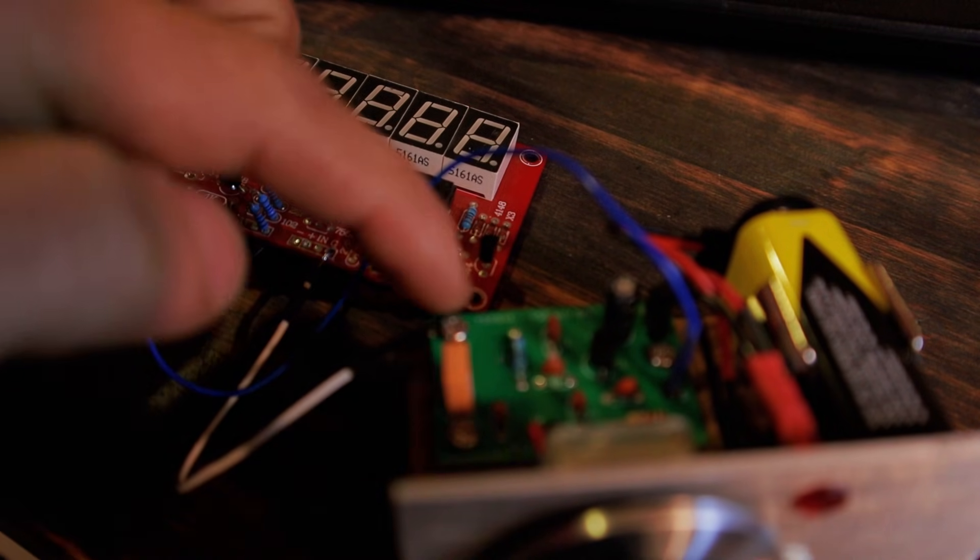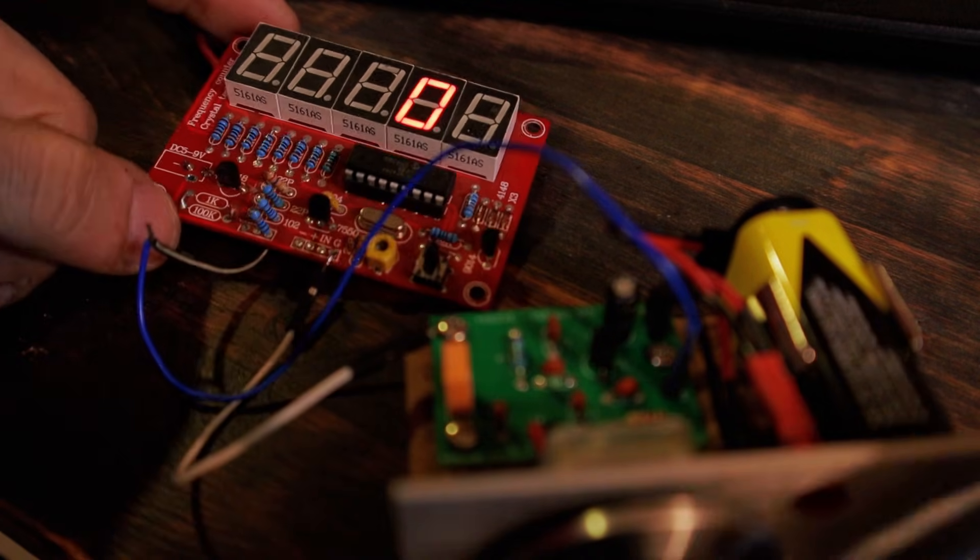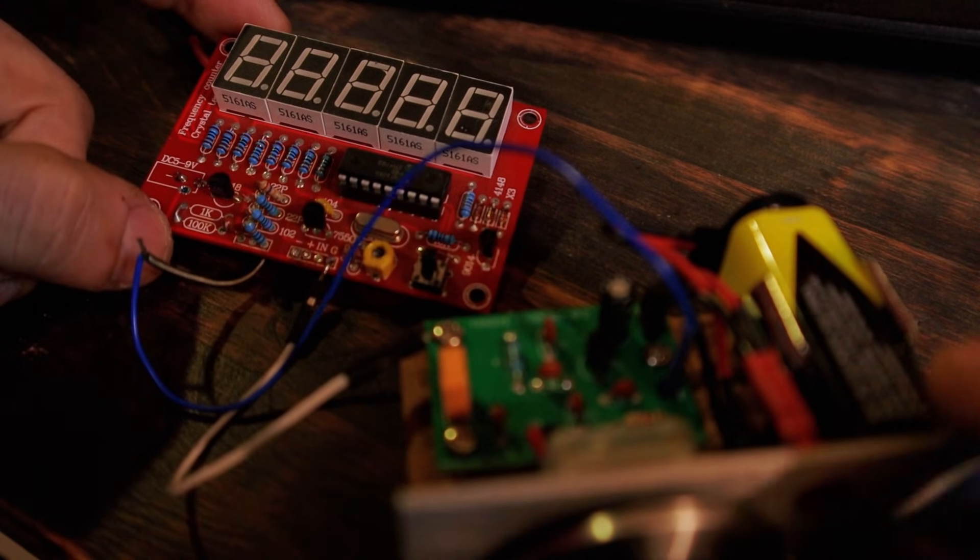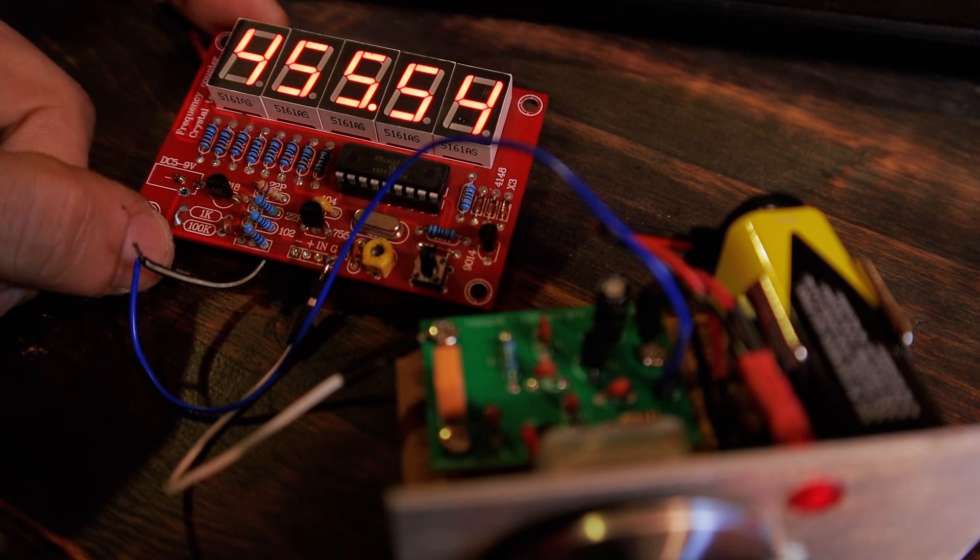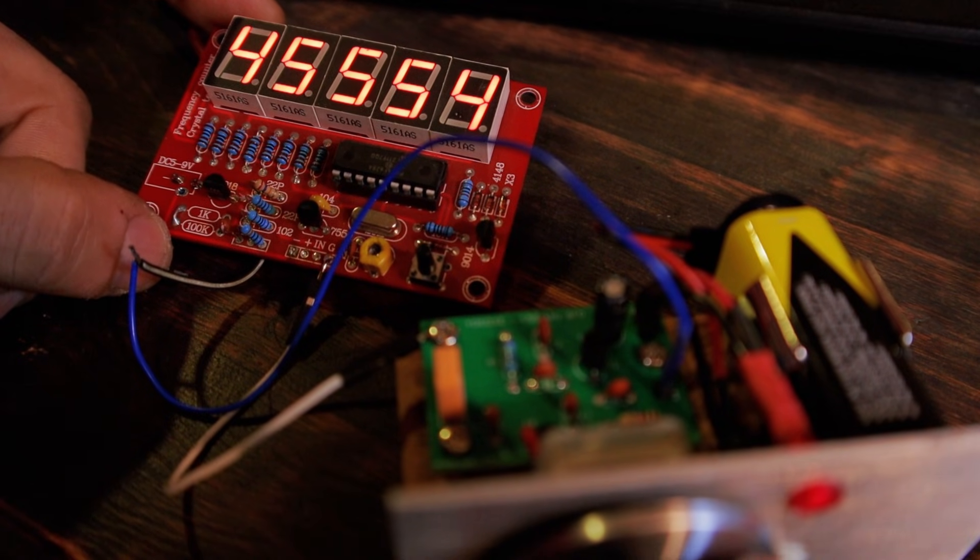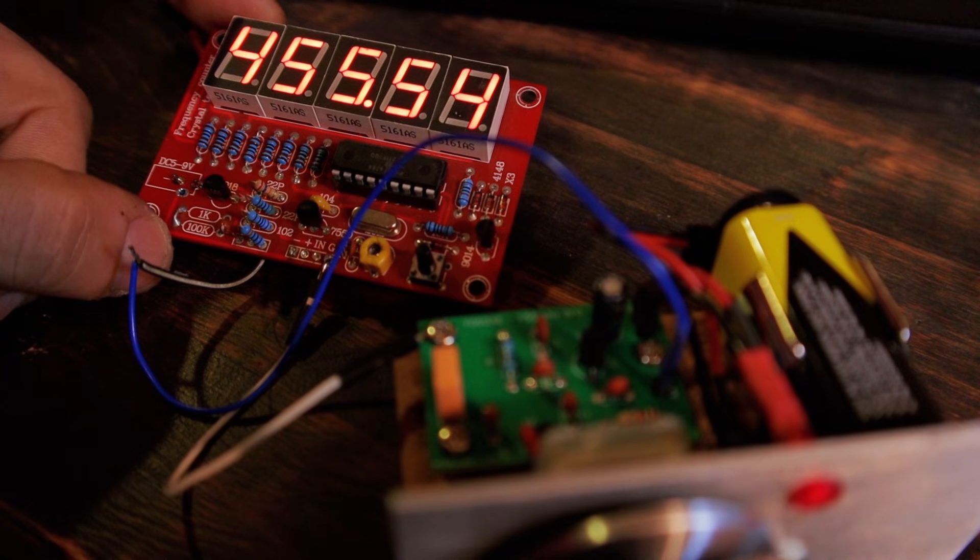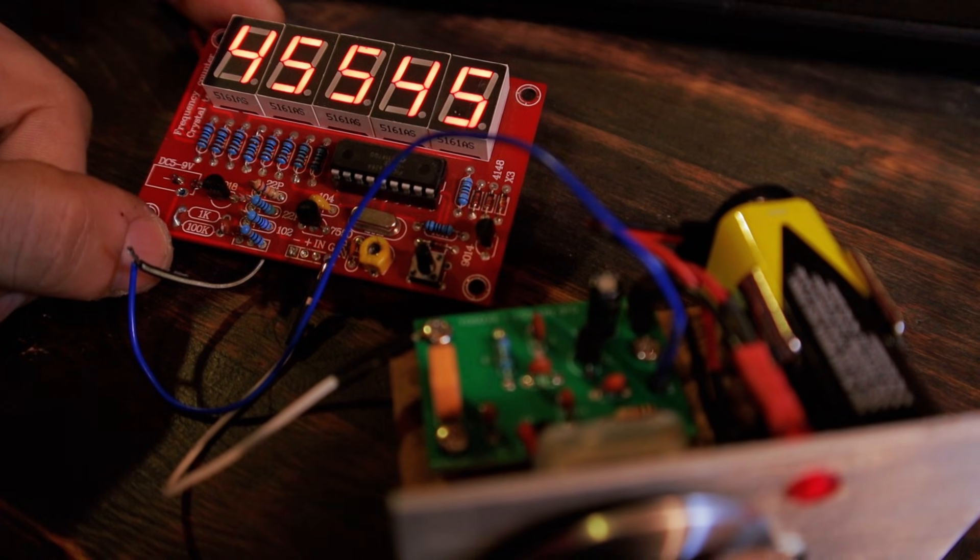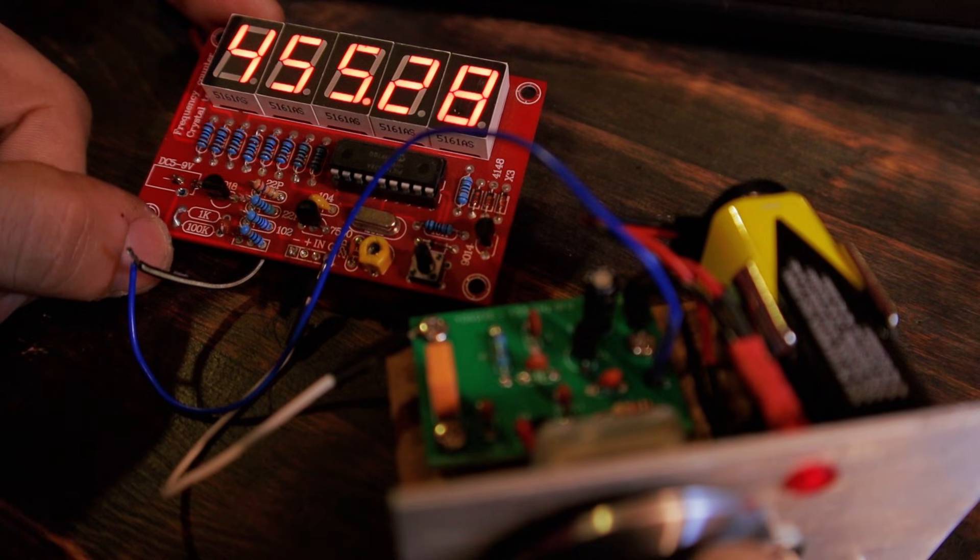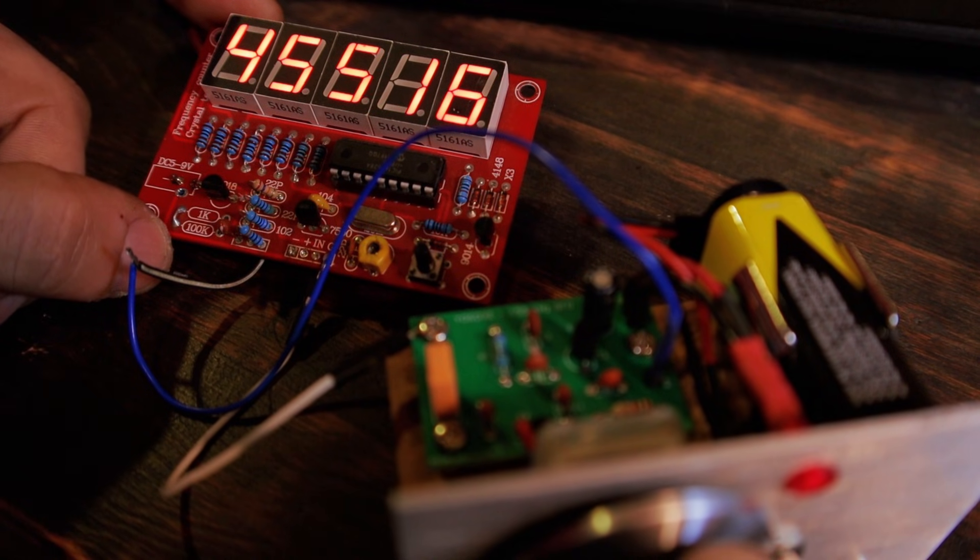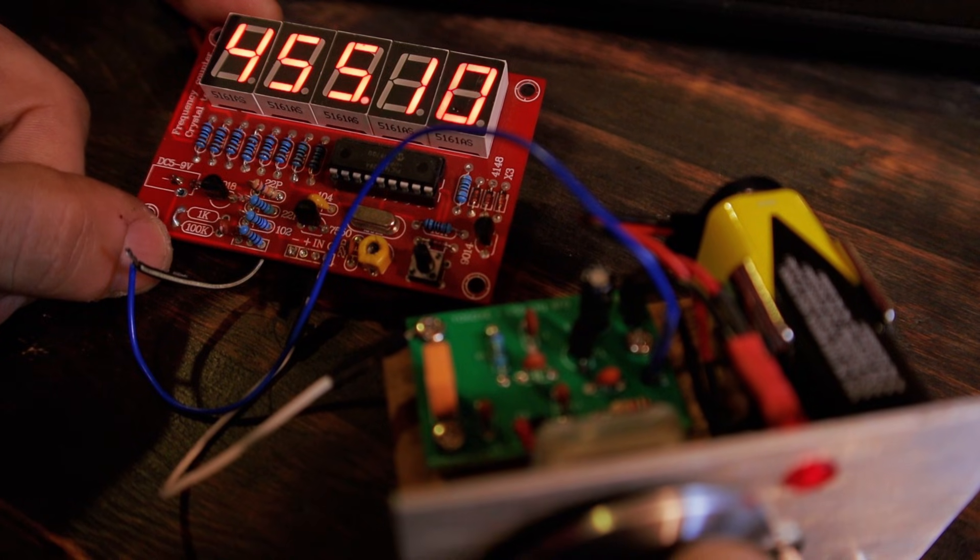What I did, I connected the antenna to the input of the frequency counter and the ground to the ground of the BFO. Right now I'm going to turn on the BFO. There we go, we have 455.54 kilohertz and with a little bit of adjustment from the variable capacitor we can tune it to exactly 455 kilohertz.